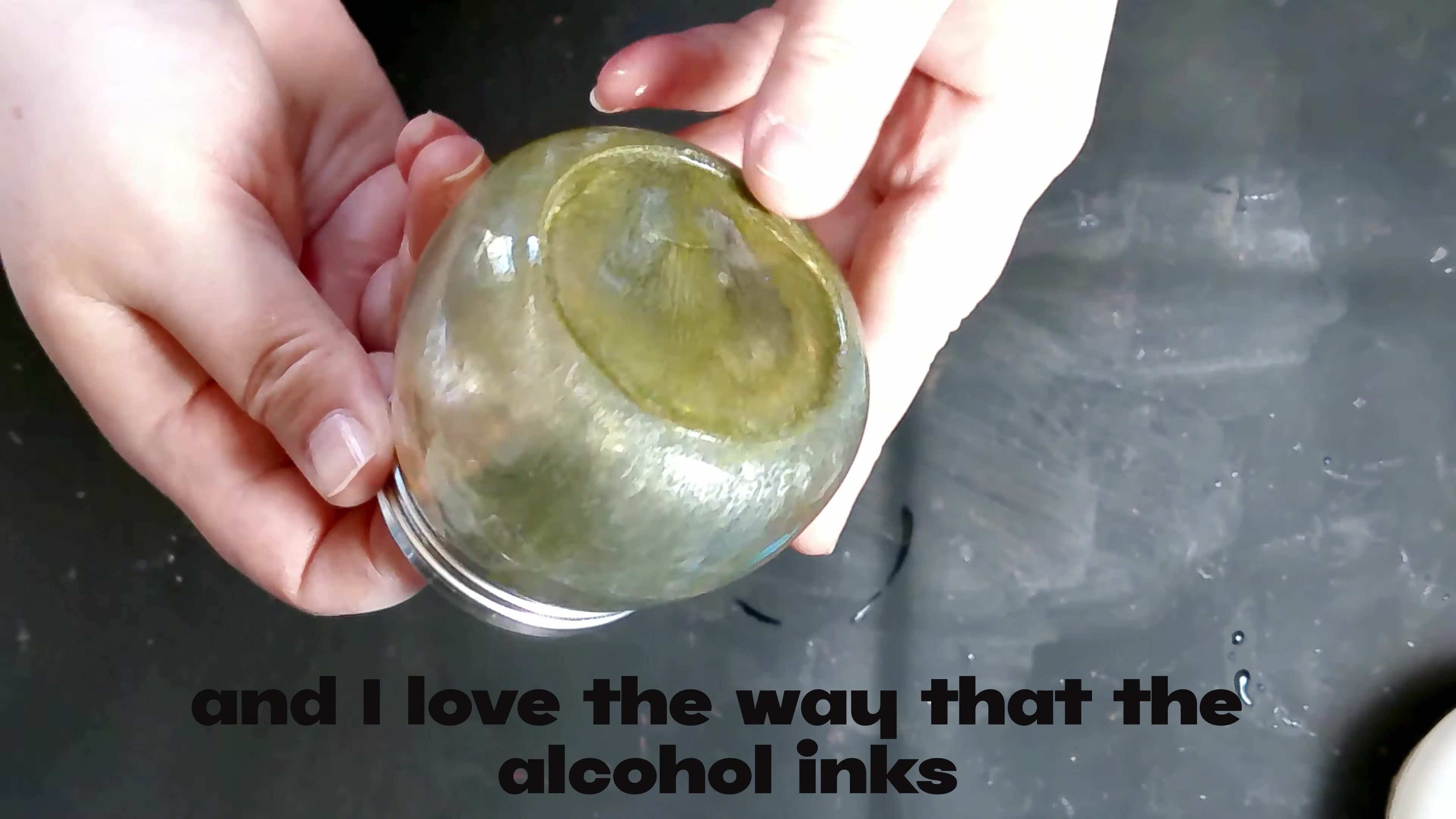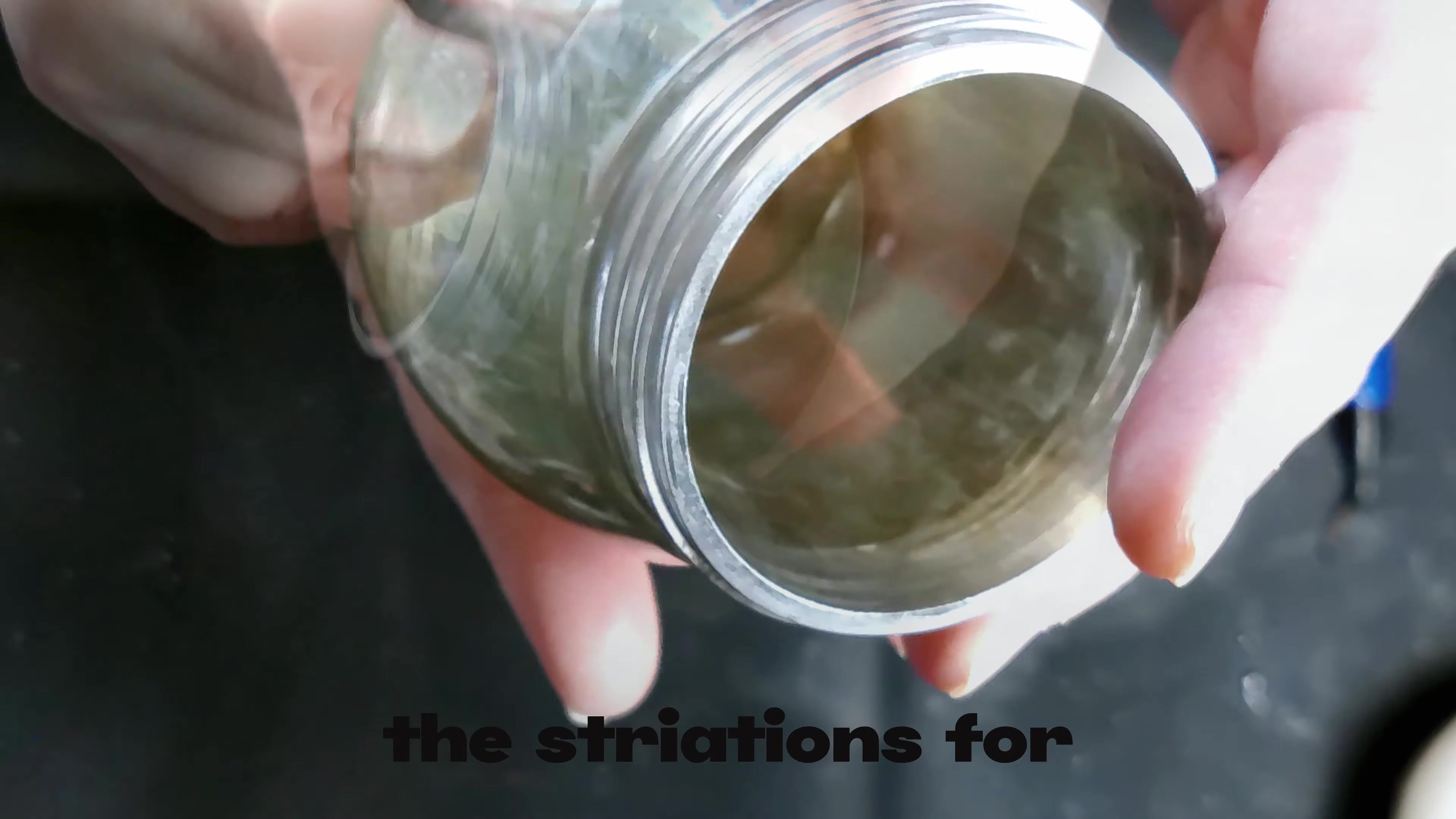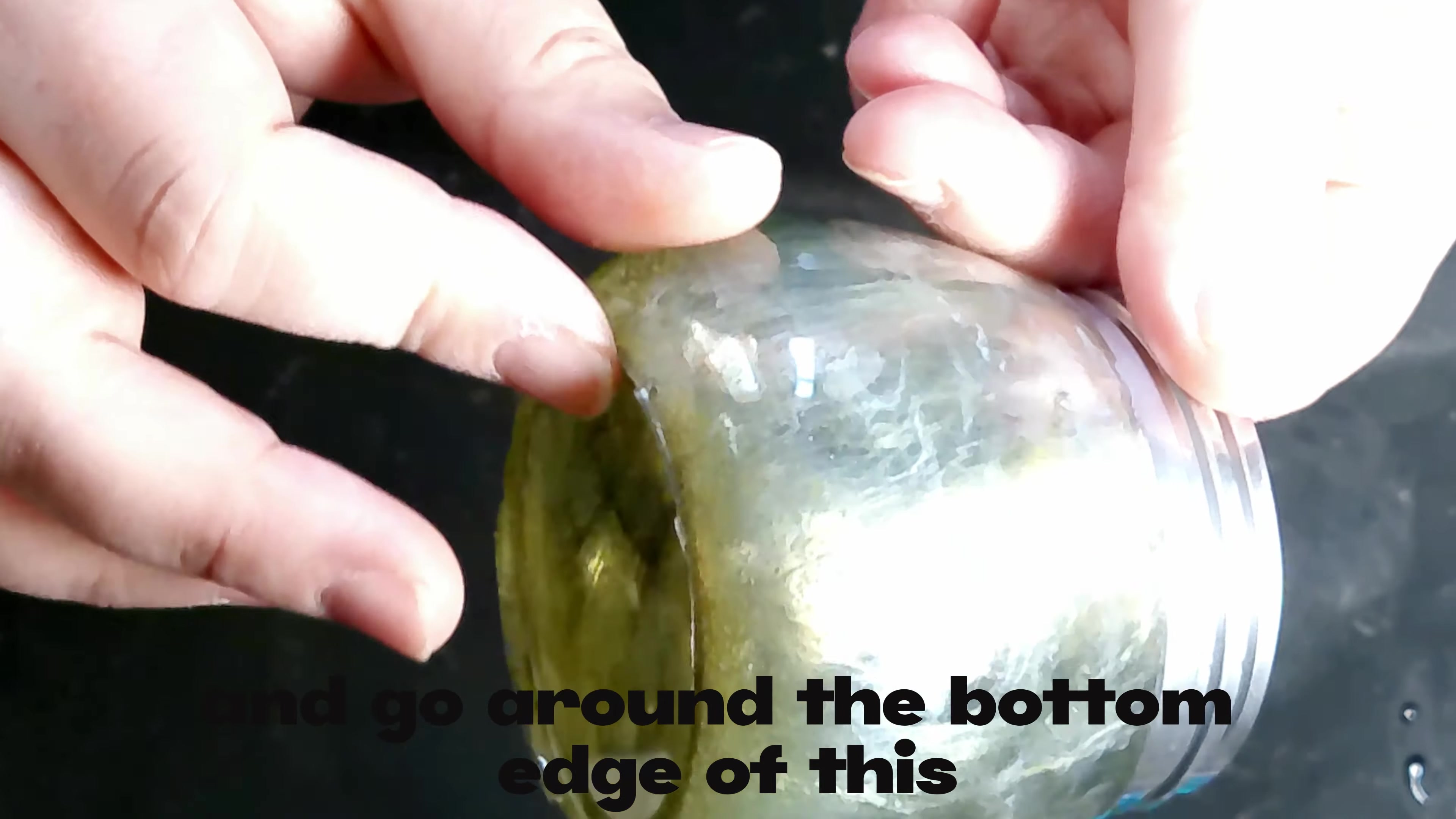And I love the way that the alcohol inks and those metallic inks kind of just floated around and give it that 3D effect. It's going to look great in my bathroom. The colors turned out beautifully. The striations from the metallic inks are just gorgeous.